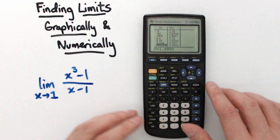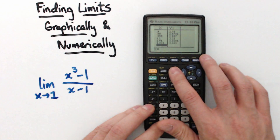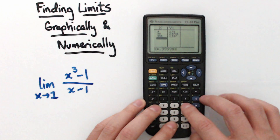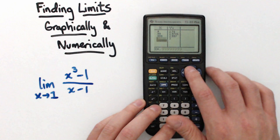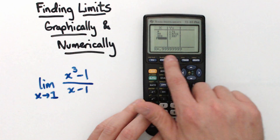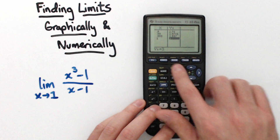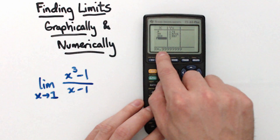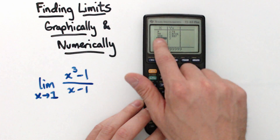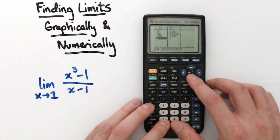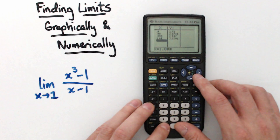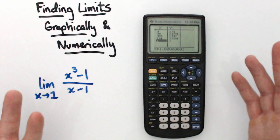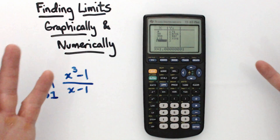One important note when using the table: if you enter something like 0.99999 with many nines, the calculator will eventually round the x-value to 1 and the y-value to 3. That's why it's important to recognize the pattern yourself rather than relying on the calculator to round, since rounding can sometimes lead to errors. The same applies approaching from the right — 1.00001 will eventually round. So that's how you find limits graphically and numerically using the TI-83 Plus calculator. If you have any questions, let me know.